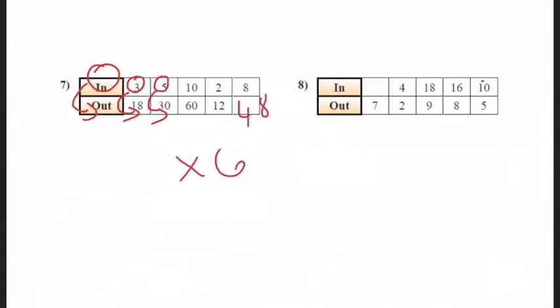For this one, we're going from 10 to 5, 16 to 8, 18 to 9, 4 to 2. So we're going down, and we are dividing. So we're dividing by 2. But you have to multiply by 2 to get this 14. But the rule is divide by 2.